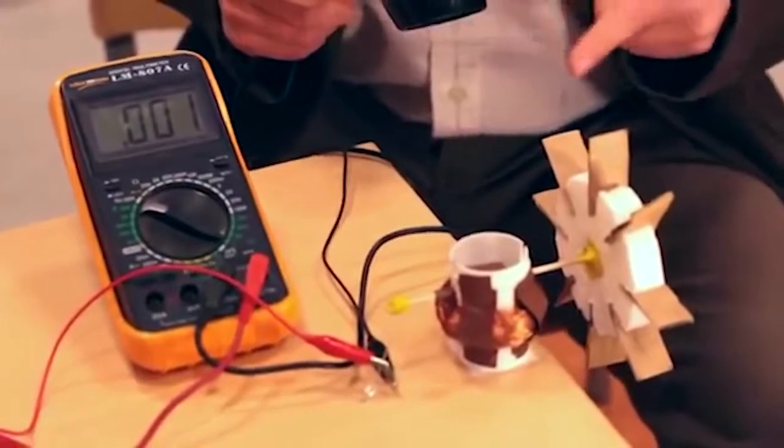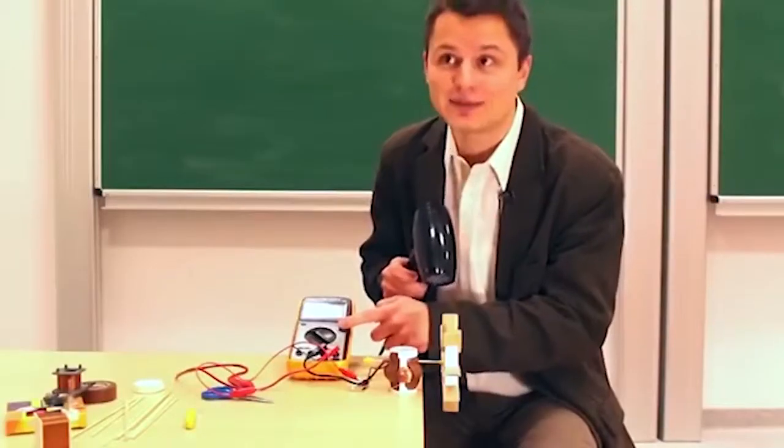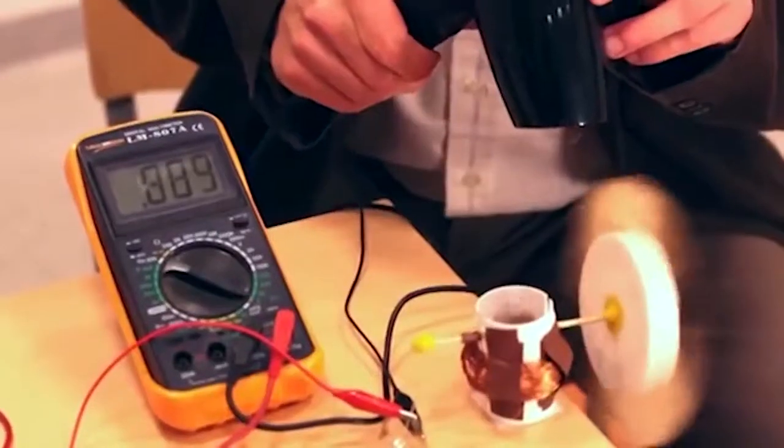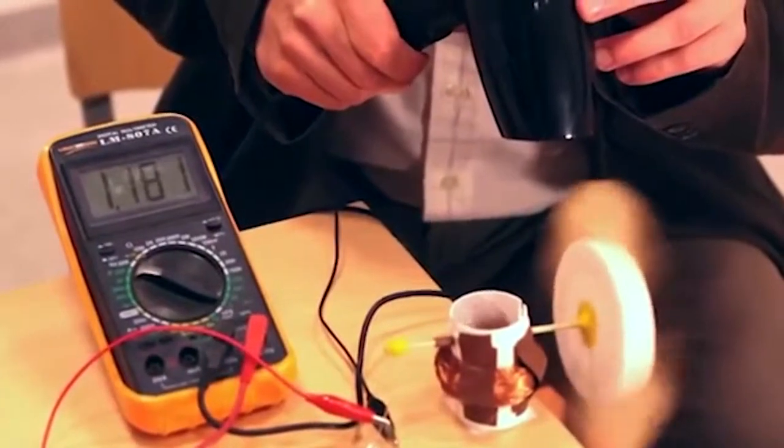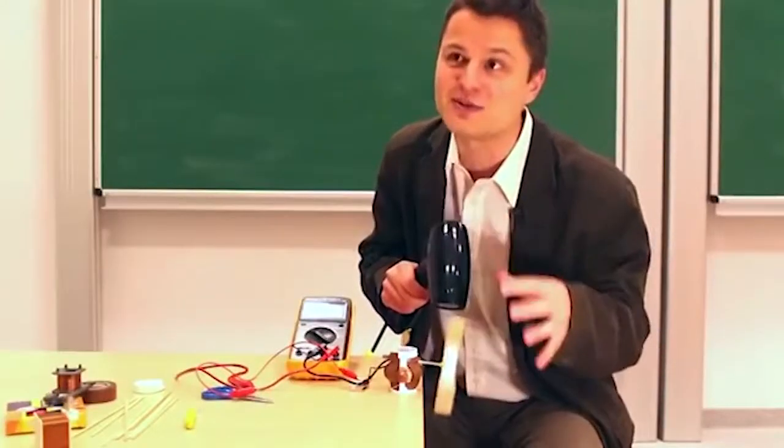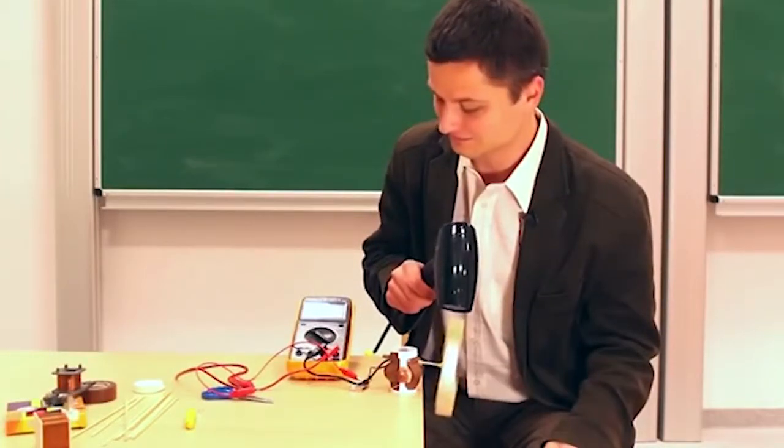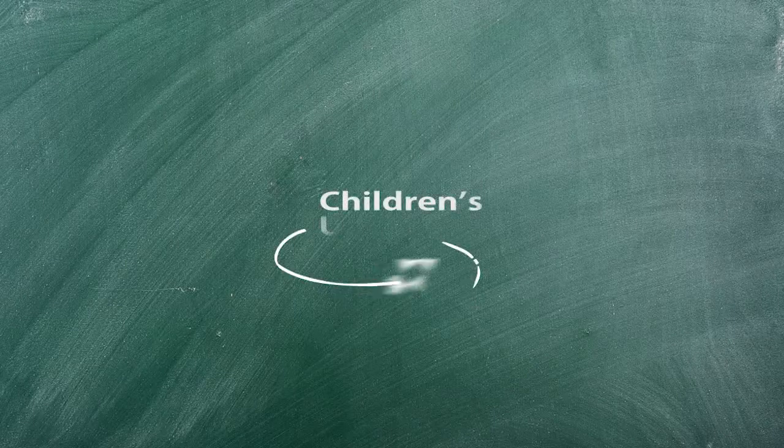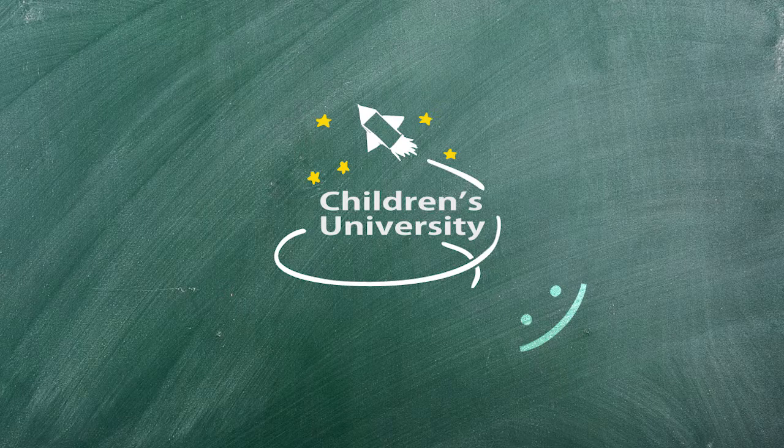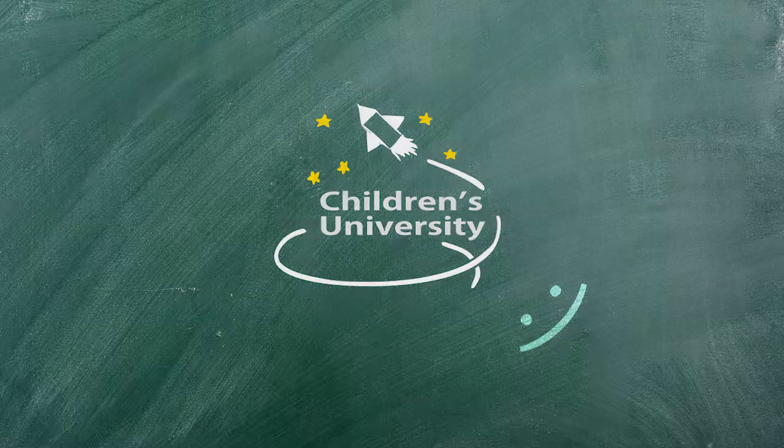We can also connect a multimeter to our system, i.e., to the turbine and LED, and check what voltage we can generate with our small model wind turbine. We see that it is somewhat above 1 volt. This may seem a bit low, but for such a small model, not bad at all.